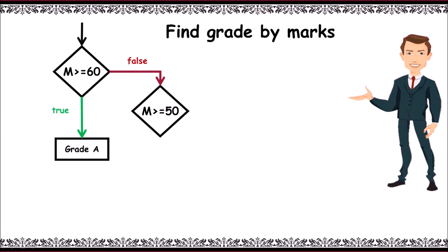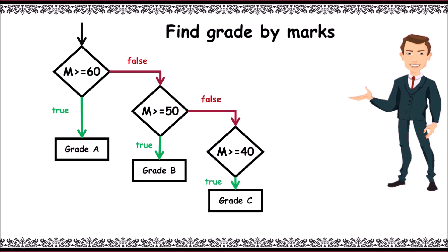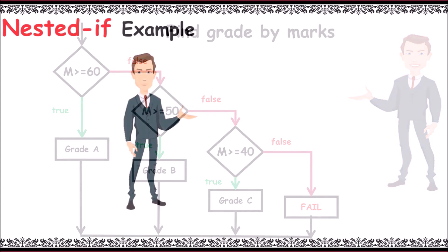or equal to 50. If verified true, it prints grade B. If false, it checks for another condition: m greater than or equal to 40. If it is verified as true, it prints grade C. If false, that is all the conditions failed, then it prints fail and control exits. Now let's have a sample program to